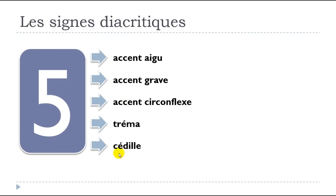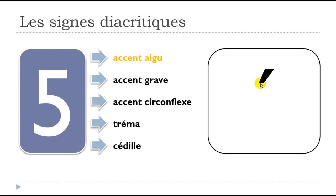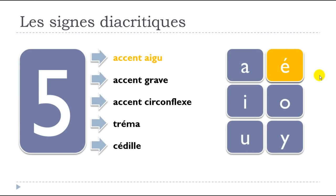So let's start with l'accent aigu — it basically looks like that. You will actually put l'accent aigu on the top of E. It doesn't come on the top of A, I, O, U, or Y — it's only on E. So keep in mind that l'accent aigu is only coming right here on the top of E.